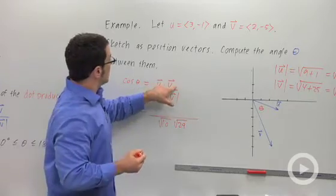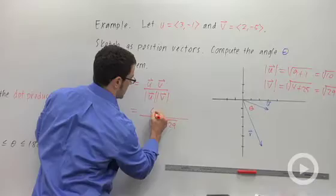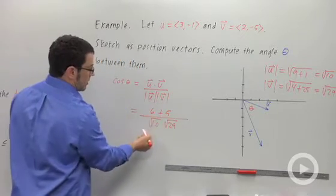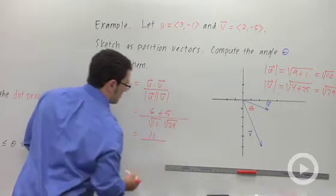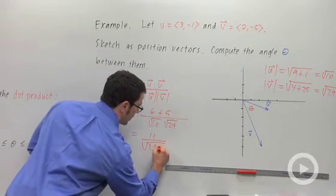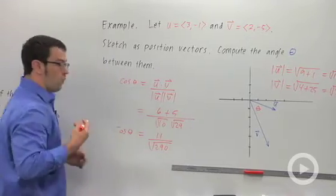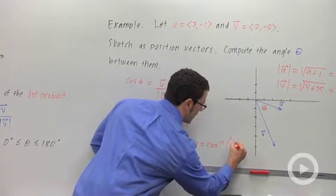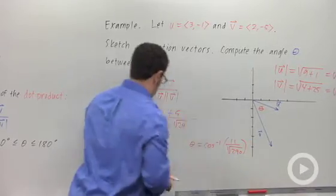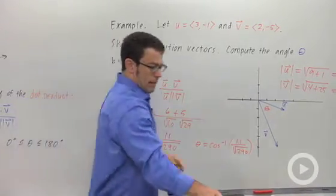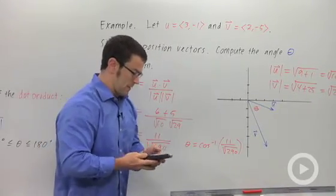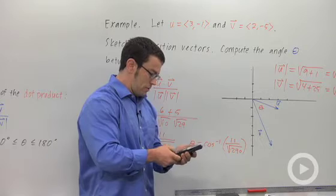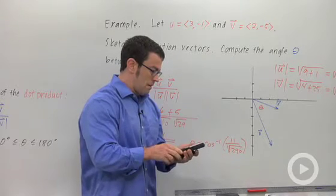Now let's calculate the dot product, u dot v. It's 3 times 2, which is 6, plus negative 1 times negative 5, which is 5. So we get 11 over this product of square roots. I'll write that as the square root of 290 — quicker to enter into the calculator. And that's cosine of theta. So if I want theta, I need to use inverse cosine. Theta equals the inverse cosine of 11 over root 290. I'd like my answer in degrees, so I'm going to make sure that I'm in degree mode. Inverse cosine of 11 divided by the square root of 290 equals 49.8 degrees.